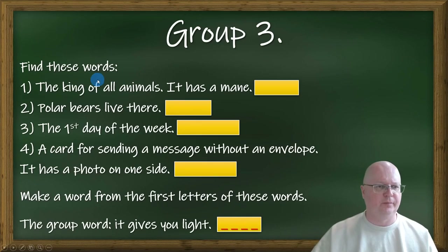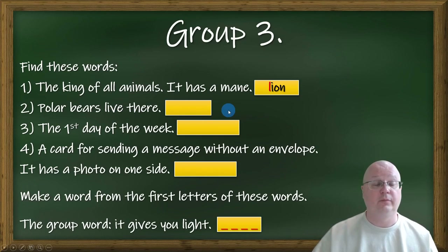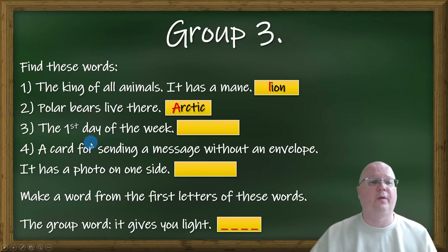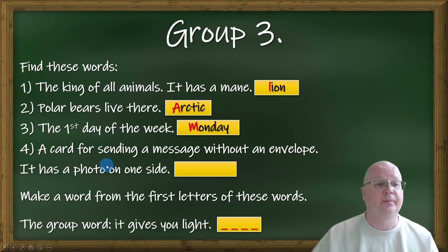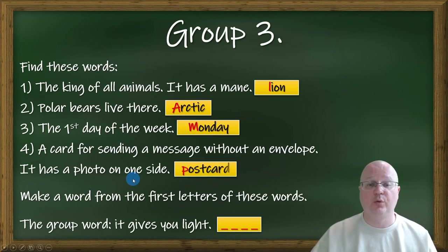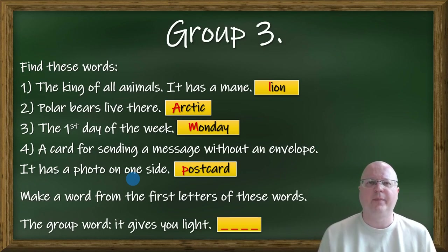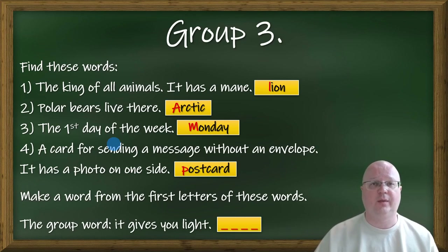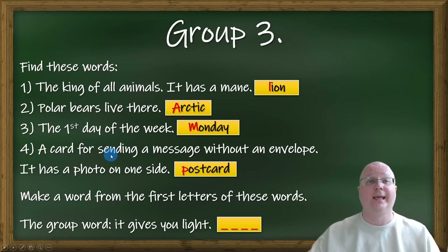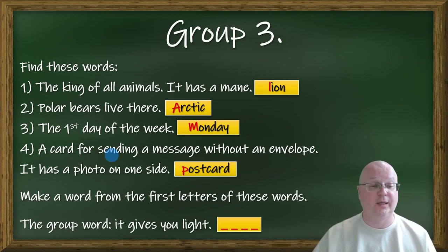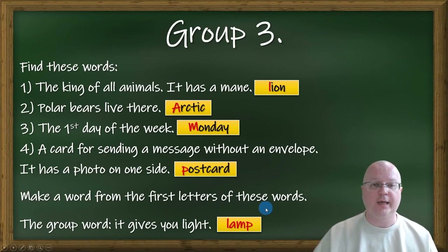Group number three: the king of all animals that has a mane is a lion. Polar bears live in the Arctic. The first day of the week is Monday. A card for sending a message without an envelope, with a photo on one side, is a postcard. Of course, you can come up with your own sentences and puzzles — this is just an example. The group word here is lamp.